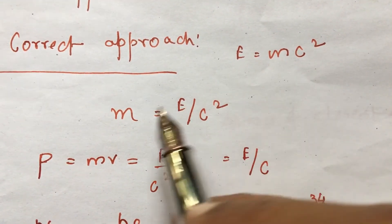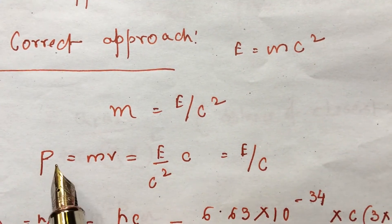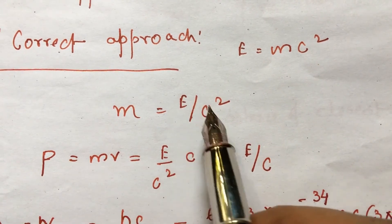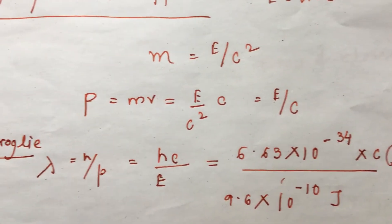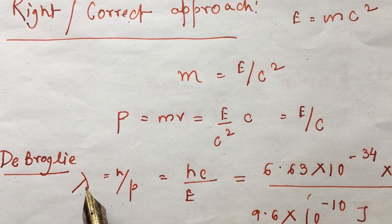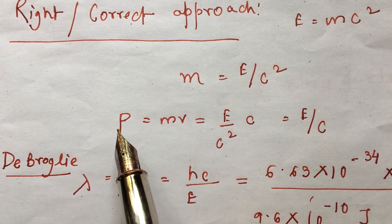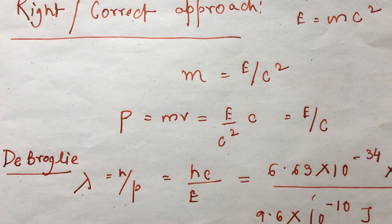So from this equation it turns out to be m equal to e by c square. Now momentum is p equal to mv and m is e by c square. So p equal to e by c.